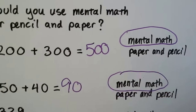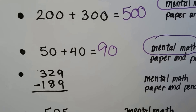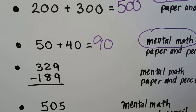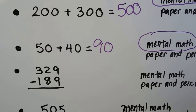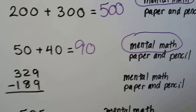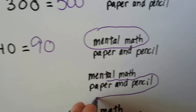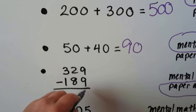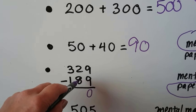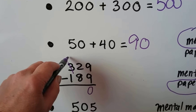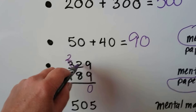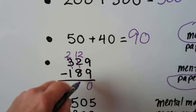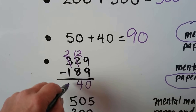Look at 329 minus 189 - would you want to use mental math or paper and pencil? It would be easier to use paper and pencil so we can regroup and see what we're doing. Nine take away nine is zero. We have two take away eight, so we need to regroup - the three hundreds becomes two hundreds, and the two tens become twelve tens. Twelve take away eight is four, and two take away one is one.